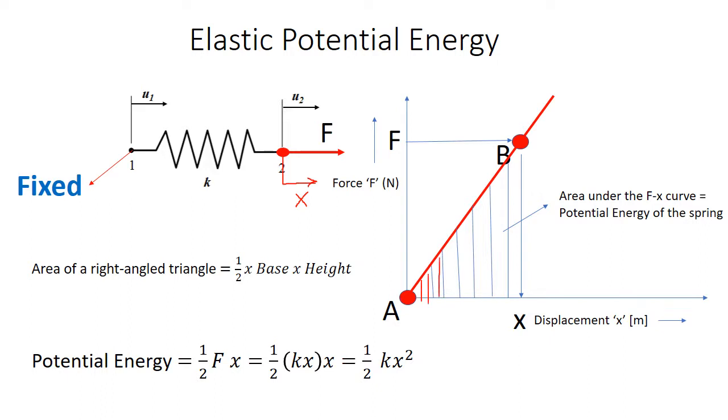Elastic potential energy is given by area under the force versus displacement diagram. We know area of a right angled triangle is half times base times height. In this case, the base is the displacement value x, and height is the applied force F, which gives us potential energy as half F times x.